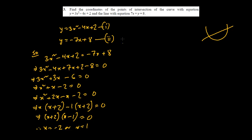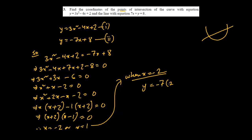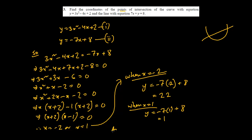We just found the x values, but a point has both x and y. When x = −2, substituting into y = −7x + 8 gives y = −7(−2) + 8 = 14 + 8 = 22. When x = 1, y = −7(1) + 8 = 1. So the two points of intersection are (1, 1) and (−2, 22).